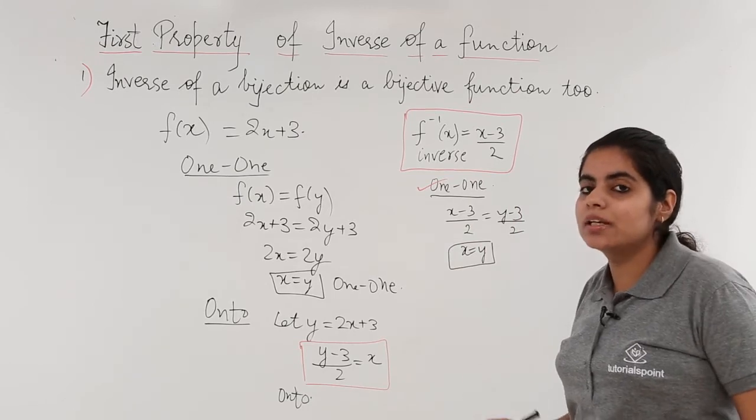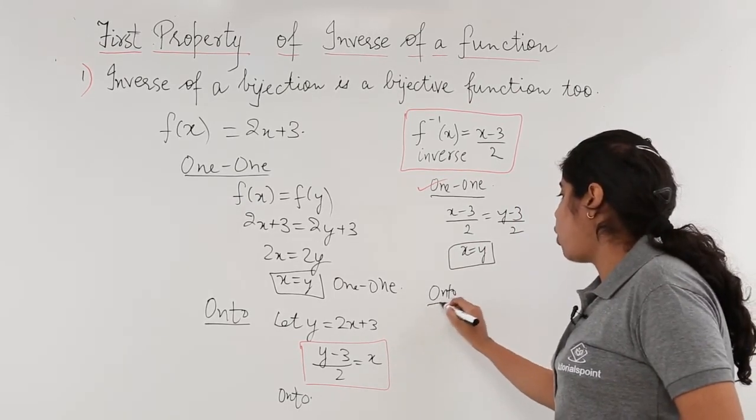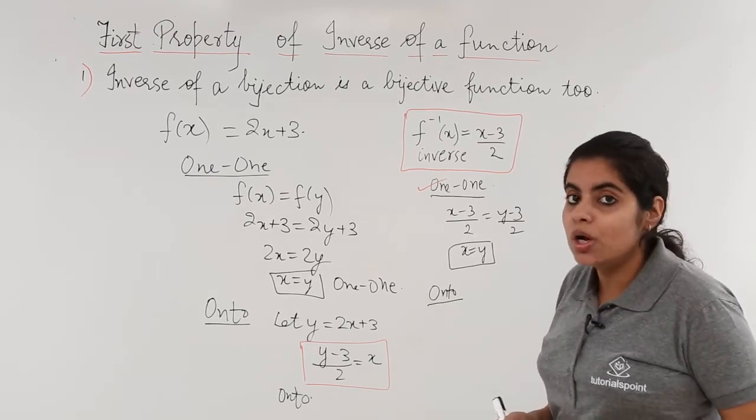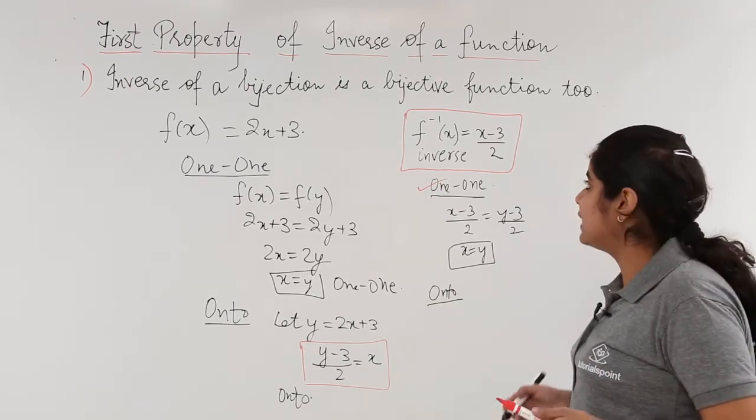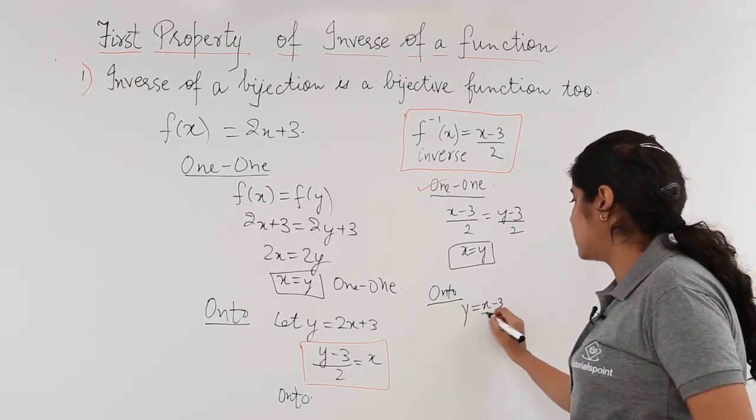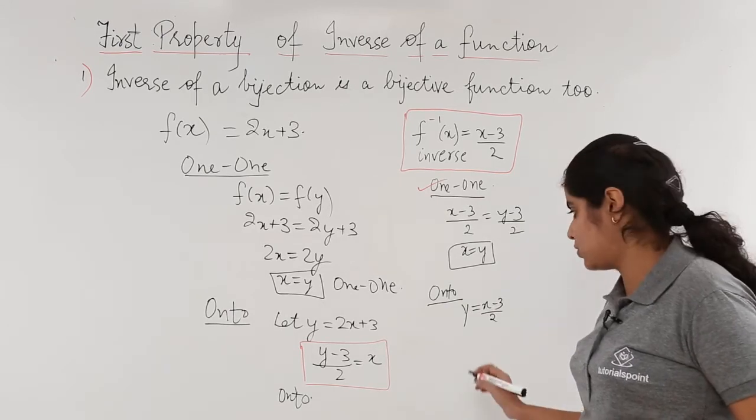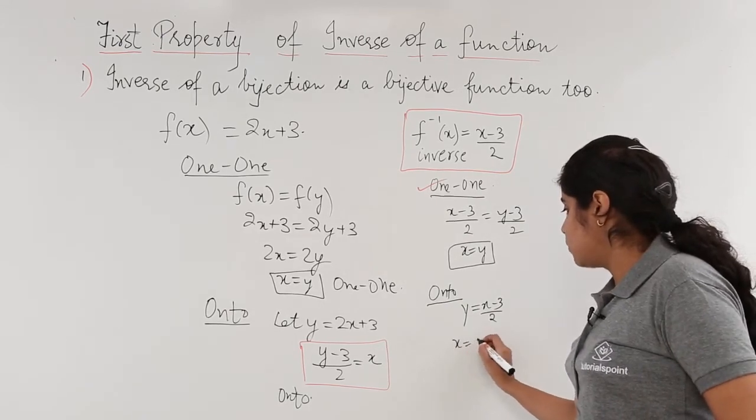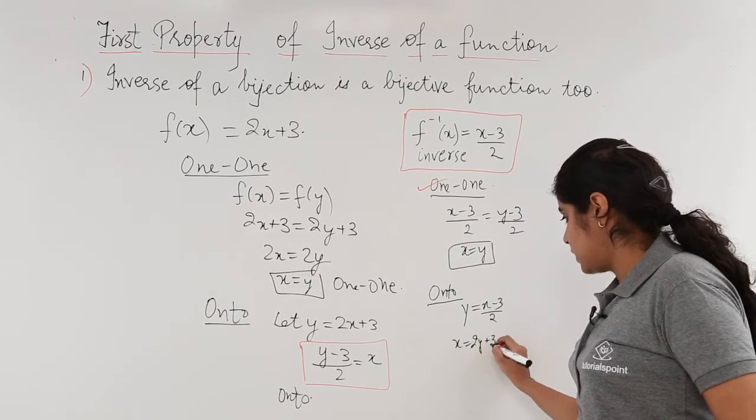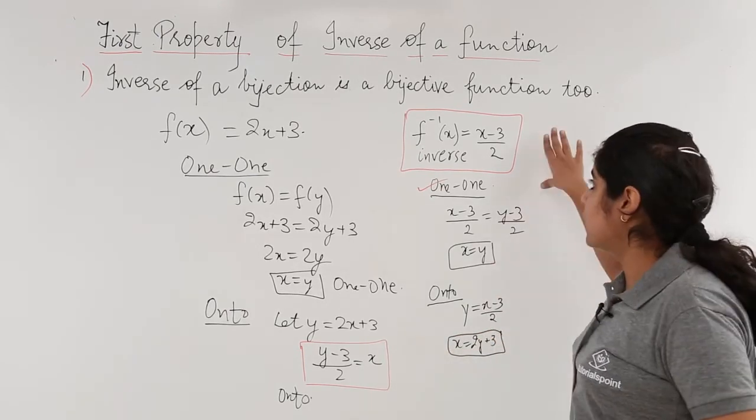Now what do I need to check? Whether it is onto or not. So for checking whether it is onto, what do I need to do? I need to substitute it as: let y is equal to (x-3)/2, find out the value of x. What is x? 2y plus 3. x is equal to 2y plus 3. Now I have my inverse.